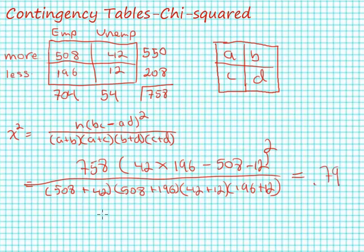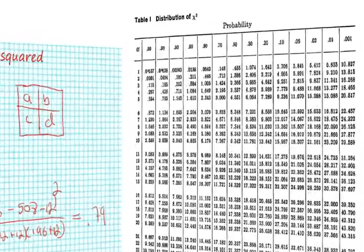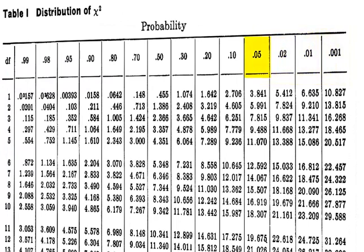Now I know it's low because when I looked at my chi-square critical with alpha equal to 0.05 with one degree of freedom—remember we calculate the degrees of freedom as the number of rows minus one times the number of columns minus one—my chi-square critical is 3.841. Clearly 0.79 is less than that so we fail to reject the null hypothesis.